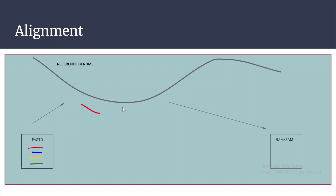In this process, each read gets compared to the reference genome and gets assigned a location where it matches best based on some algorithm. This process happens to each read available in the FASTQ, then it maps to the reference genome. At the end of the alignment process, you will have the whole genome sequence in order with other field information in the BAM and SAM file format.